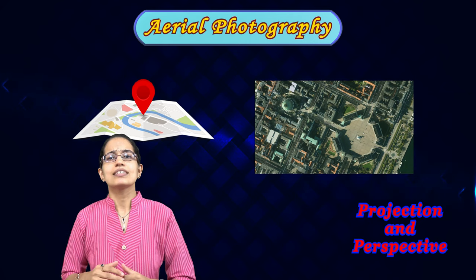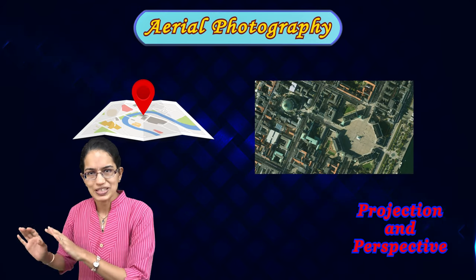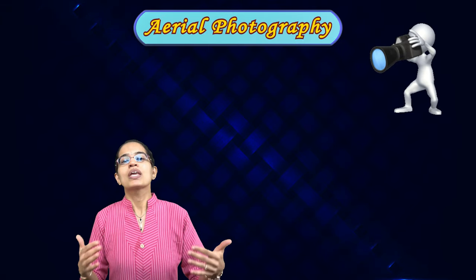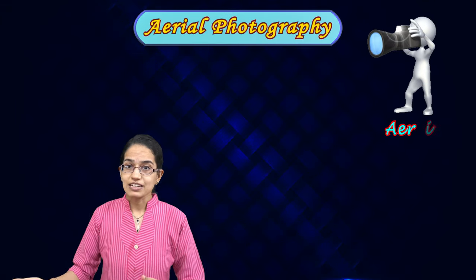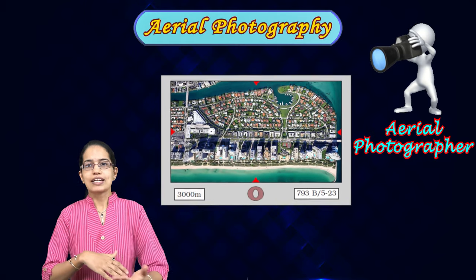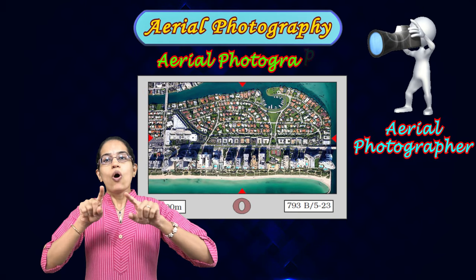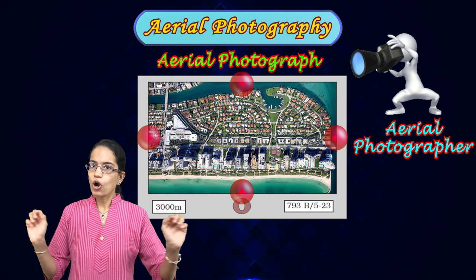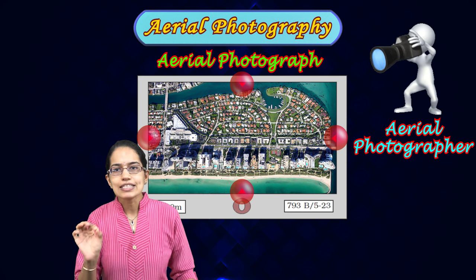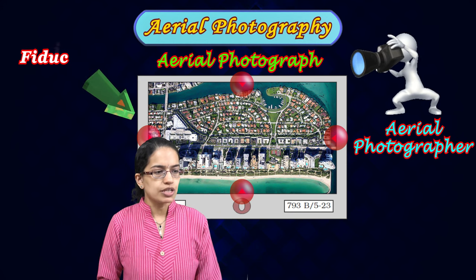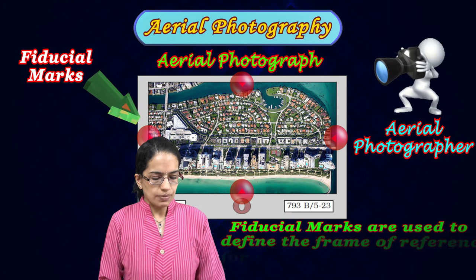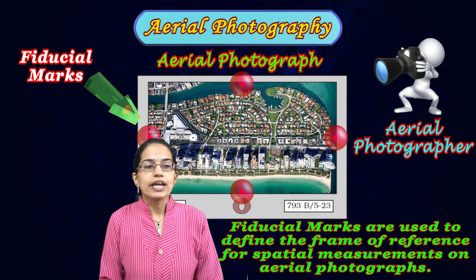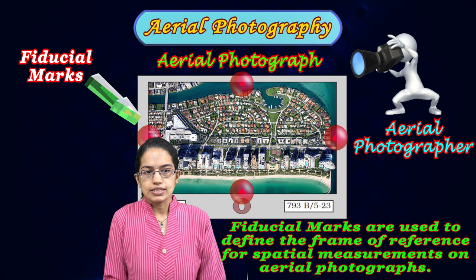Before that, let's understand certain general terms that will help us sail through this lecture. The person doing aerial photography is an aerial photographer. The results that come up are the aerial photograph. On the aerial photograph, you have four corners — either the corners or the center would be marked — and this is known as fiducial marks. These fiducial marks are very important to help you understand how and where the actual object is.